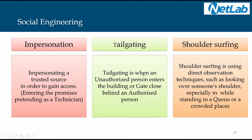Tailgating is when an unauthorized person enters a building or gate by following close behind an authorized person. For example, an authorized person shows his ID card, opens the door, and passes through — and the attacker follows close behind. That is tailgating. Shoulder surfing is using direct observation techniques such as looking over someone's shoulder, especially in ATM queues or crowded places. Social engineering is essentially trapping people.